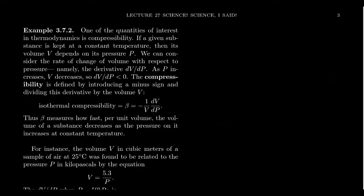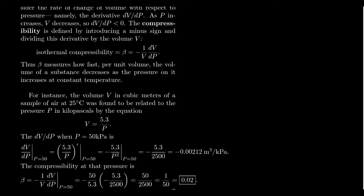So what this tells us is that beta is going to measure how fast per unit of volume, the volume of a substance decreases as the pressure on it increases at constant temperature. So that's the idea behind isothermal compressibility. This is a valuable quantity to measure how easily one can compress a certain gas.